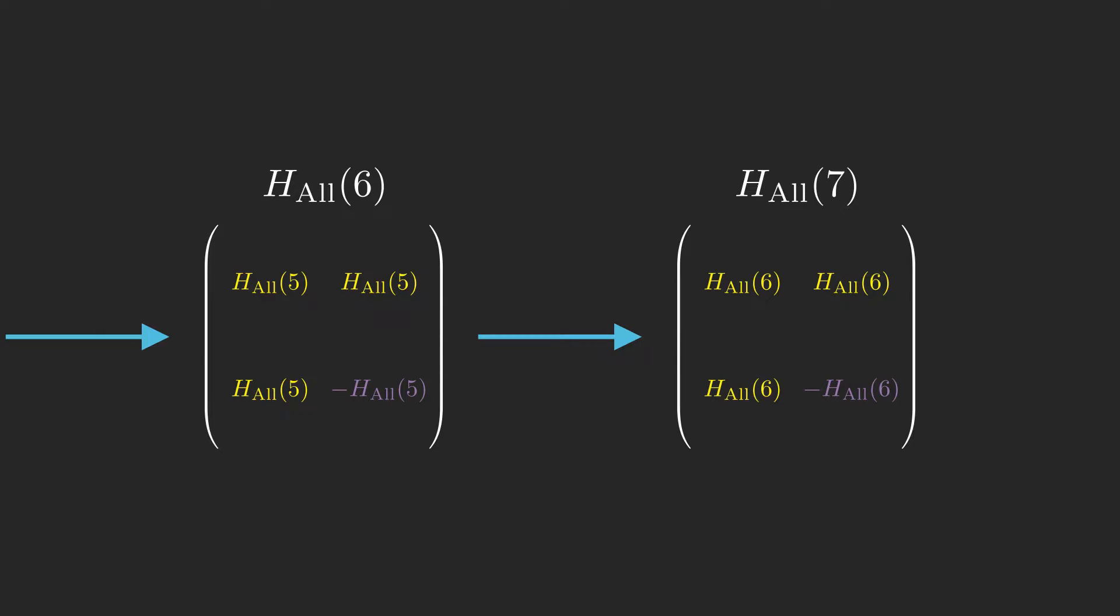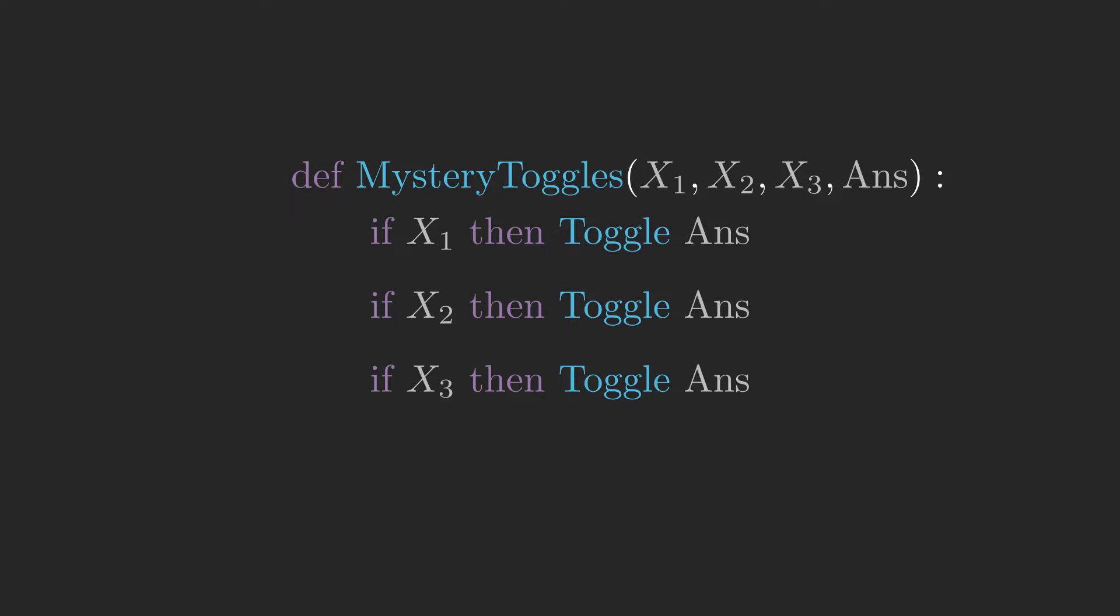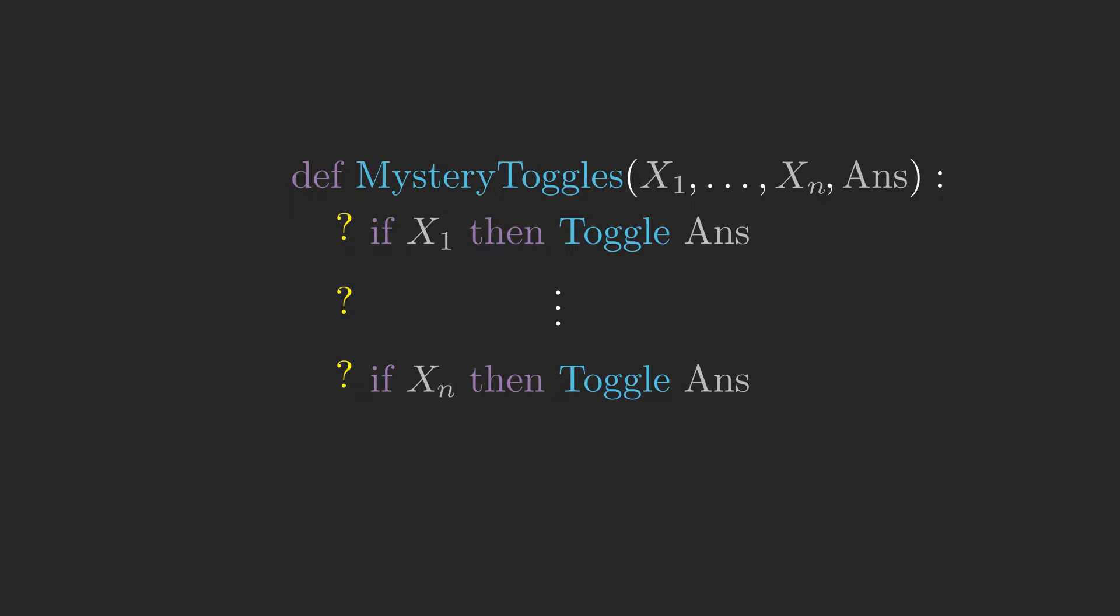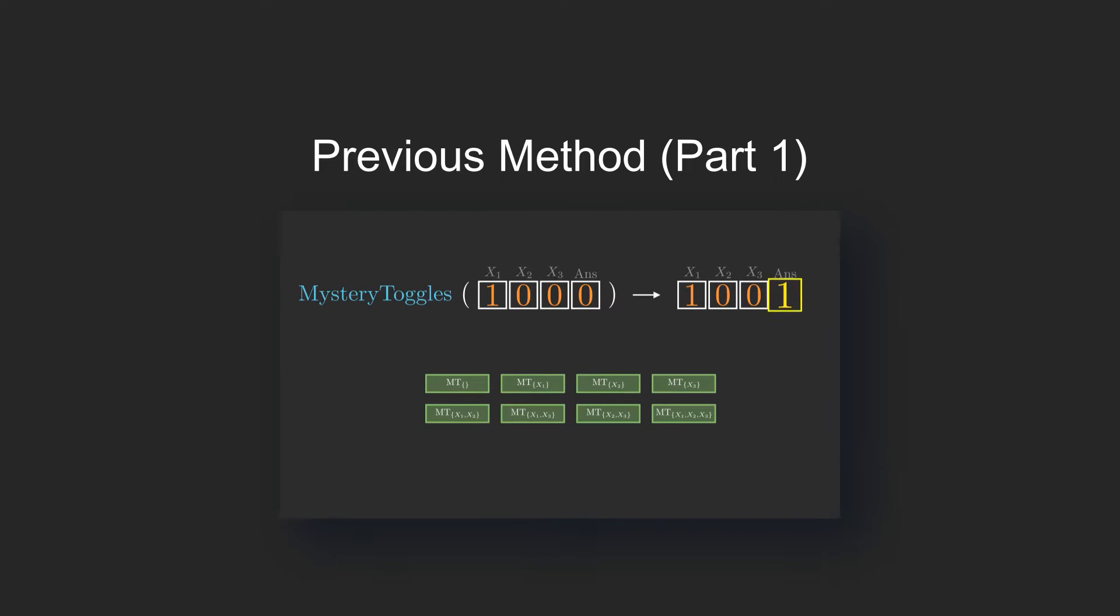It's finally time to return to mystery toggles, which if you remember back from part 1, contains some subset of the lines, if x1 then toggle answer, if x2 then toggle answer, etc. In part 1, there were three x's, but here we'll consider the more general case where there are n x's. We want to know which version is the true mystery toggles with as few calls to mystery toggles as possible. With the classical approach, we saw in part 1 that an optimal strategy solves this problem with n calls for n x's. However, if mystery toggles can operate on qubits, it is possible to use just one single call no matter how many x's there are.